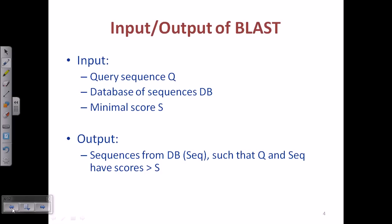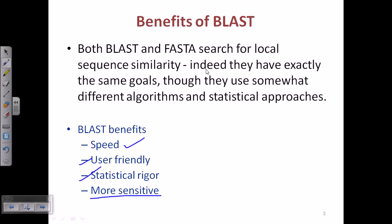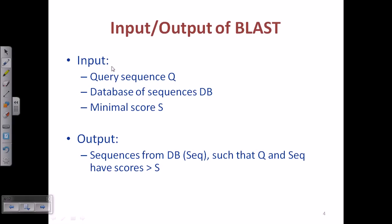BLAST can utilize its exact sequence matching scheme and look for short nucleotide sequence matches within the whole database. The inputs of BLAST are a query sequence designated as Q and the database sequence, also called the target sequence, designated as DB. The minimal score is S — any alignment must cross this score threshold, otherwise BLAST will not count that alignment.